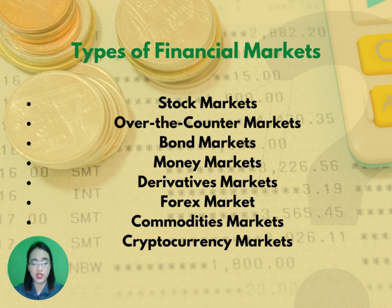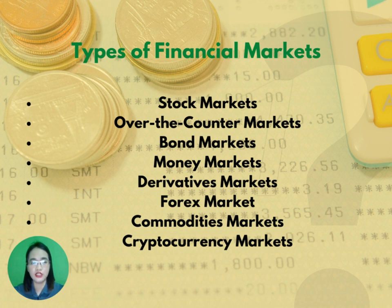A bond is a security in which an investor loans money for a defined period at a pre-established interest rate. You may think of a bond as an agreement between the lender and the borrower containing the details of the loan and its payment. Bonds are issued by corporations as well as municipalities, states, and sovereign governments to finance projects and operations. Money markets trade in products with highly liquid short-term maturities of less than one year and are characterized by a high degree of safety and a relatively low return in interest.